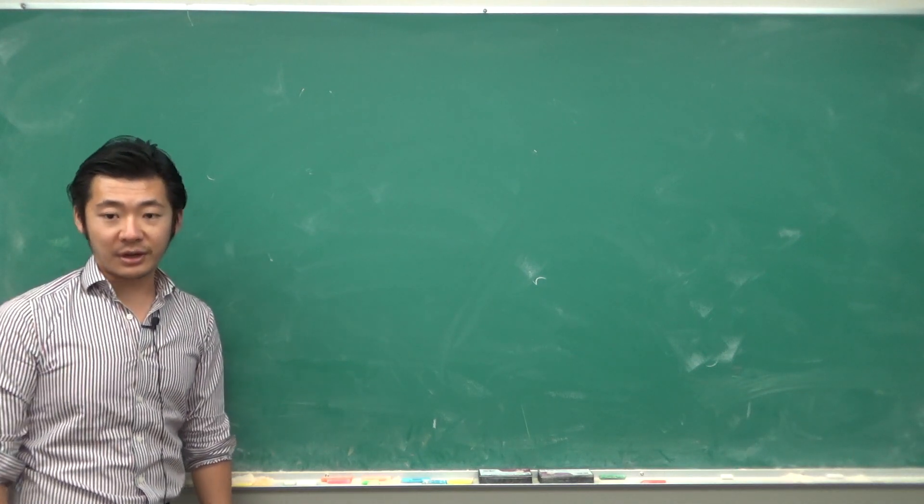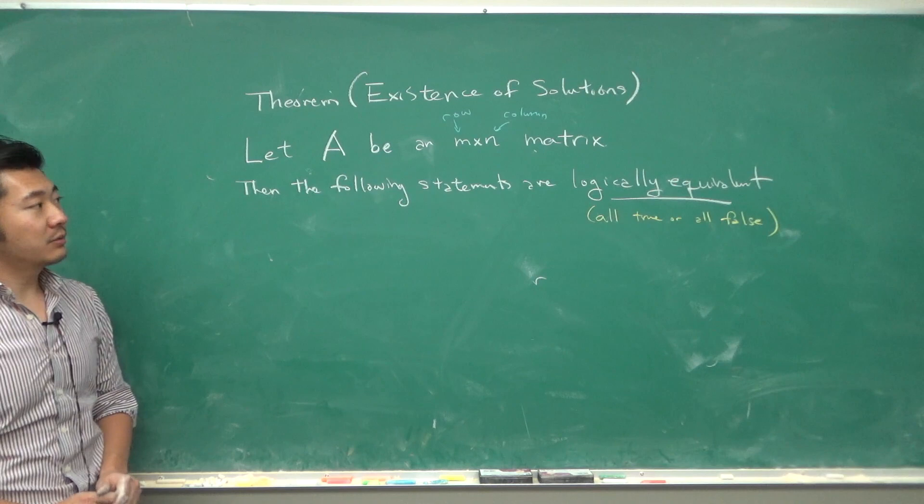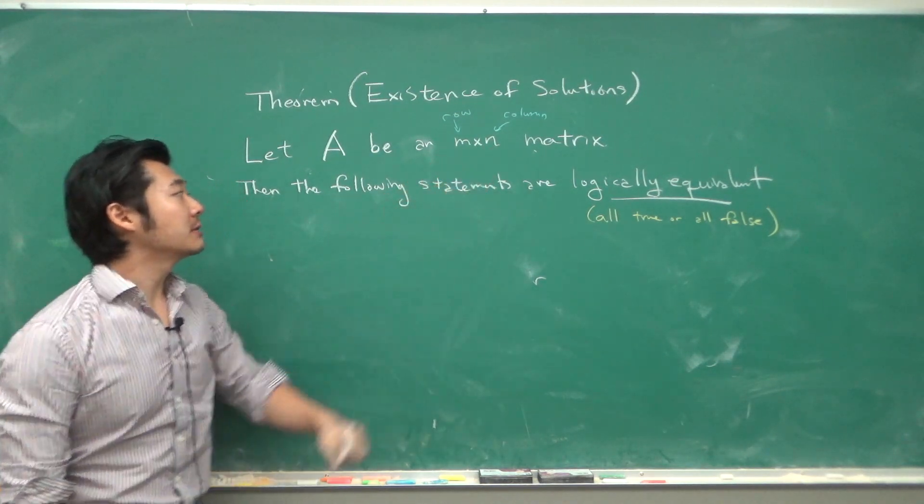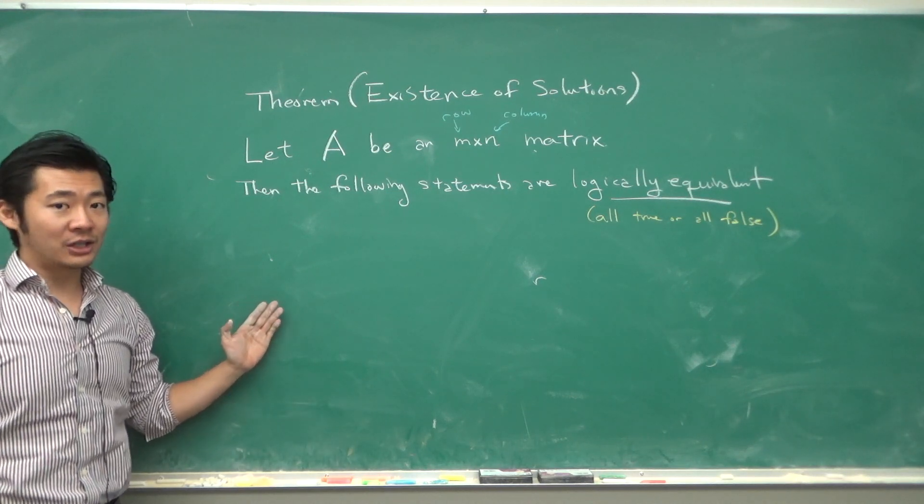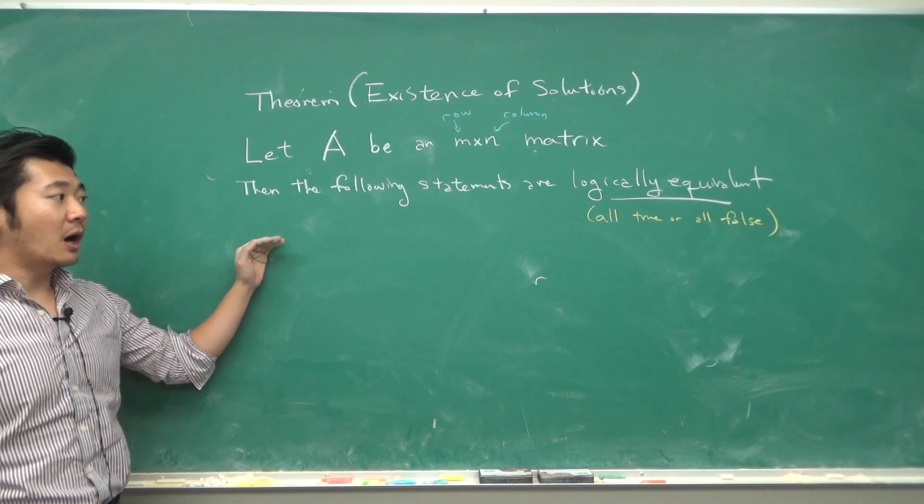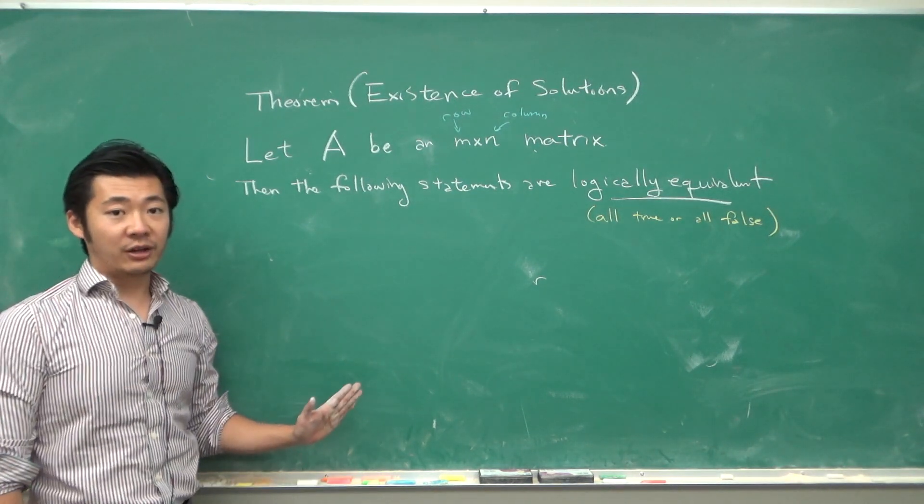And so we introduce our first theorem. Let A be an m by n matrix. When we say m by n, we mean m rows and n columns. Then the following statements are logically equivalent. That means that the following statements are going to be all true or all false for a particular matrix A.